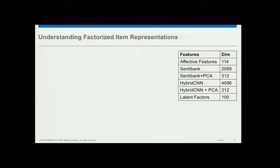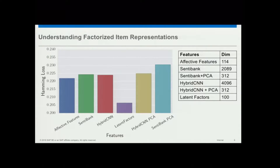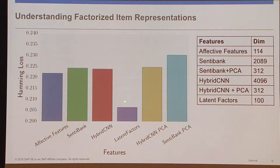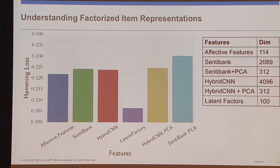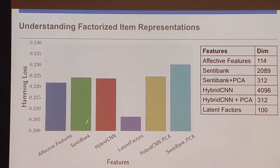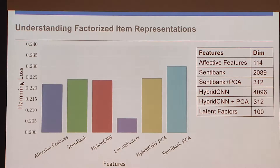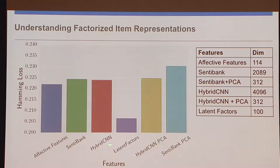These are the set of features I took — you can see they have different dimensions. What I observe is that the Hamming loss for latent factors is very low, which means for the multi-label classification, it does actually carry emotion information. This is quite a nice result. All these are state-of-the-art representations. Centibank is highly positive or highly negative due to how they collect the data. Affective features come from photography and psychology studies. But the interesting thing is that the latent factors are really important — there is affective information and an emotional connect that these latent factors actually carry.